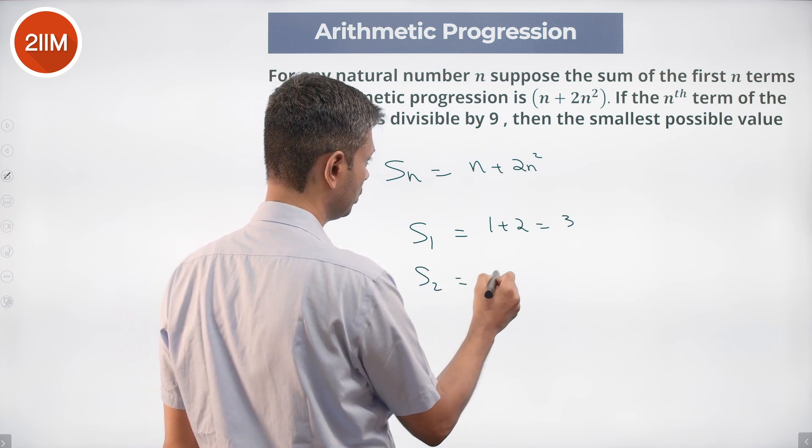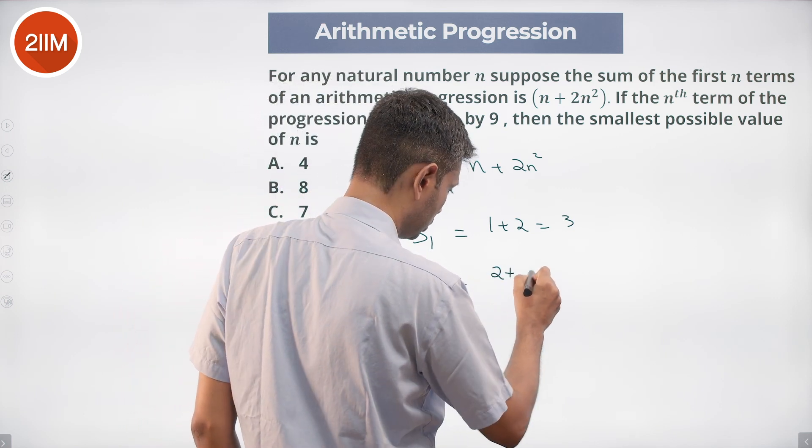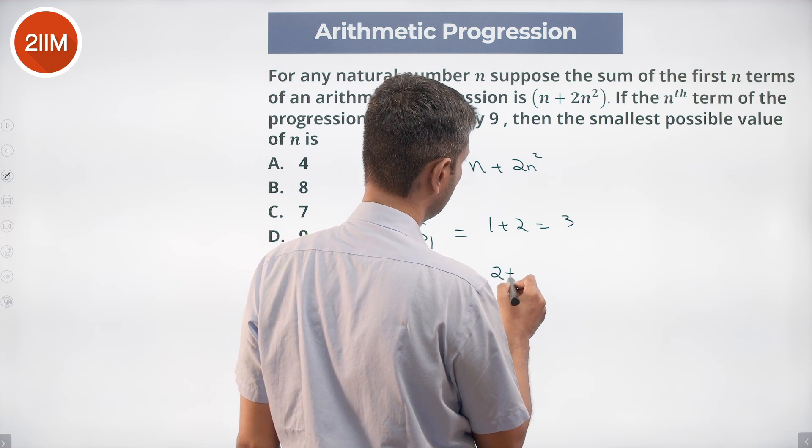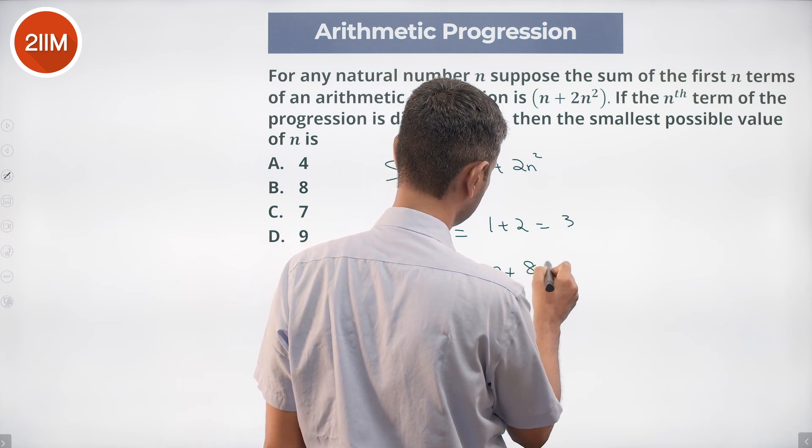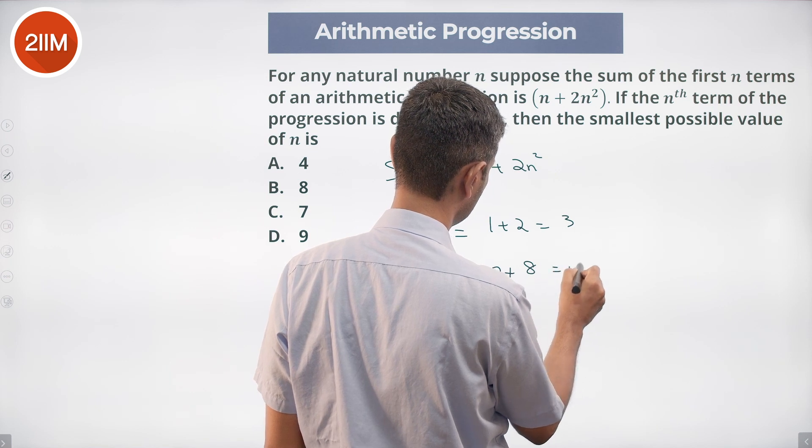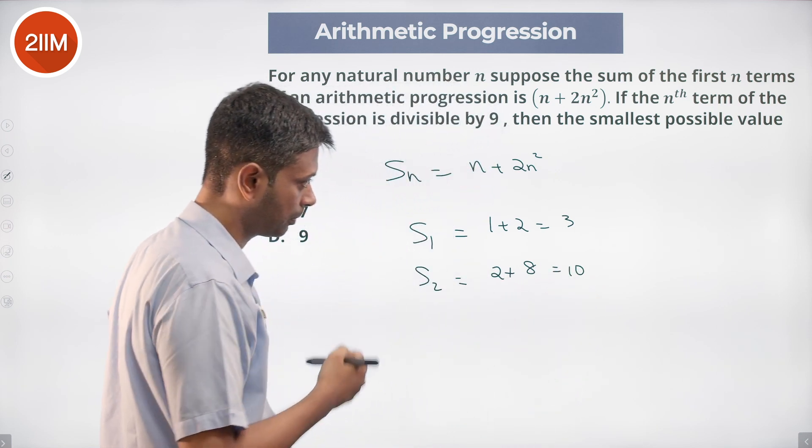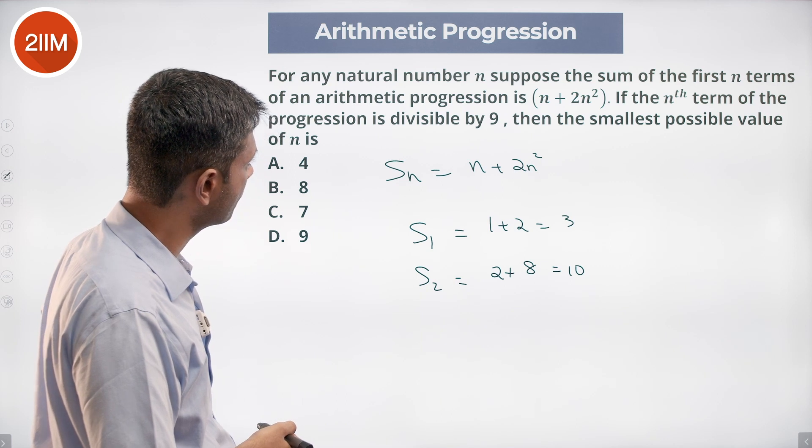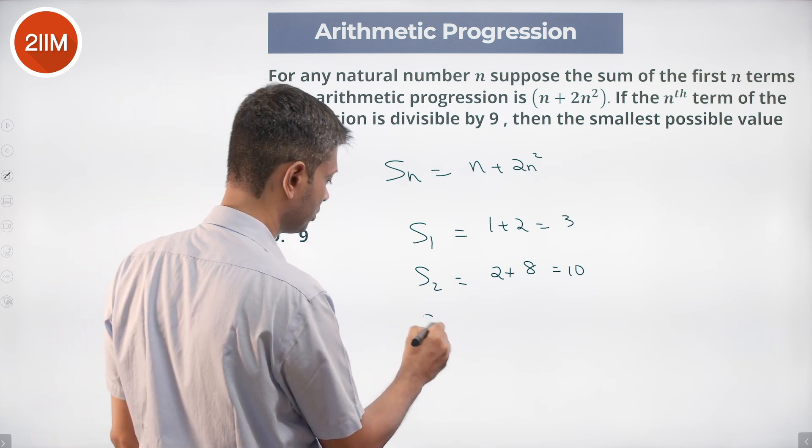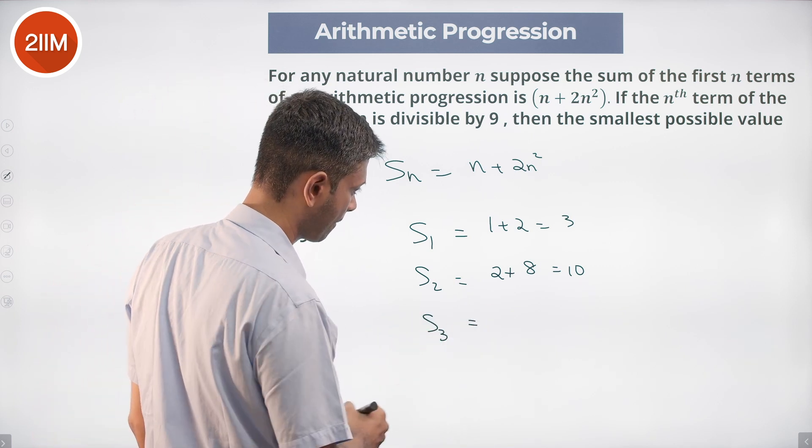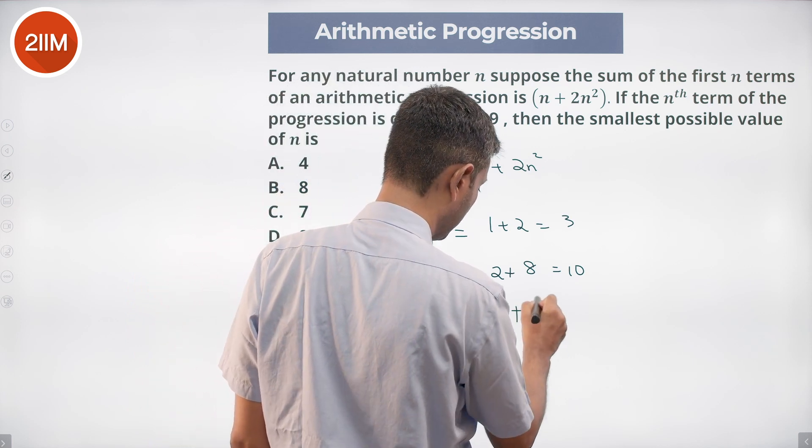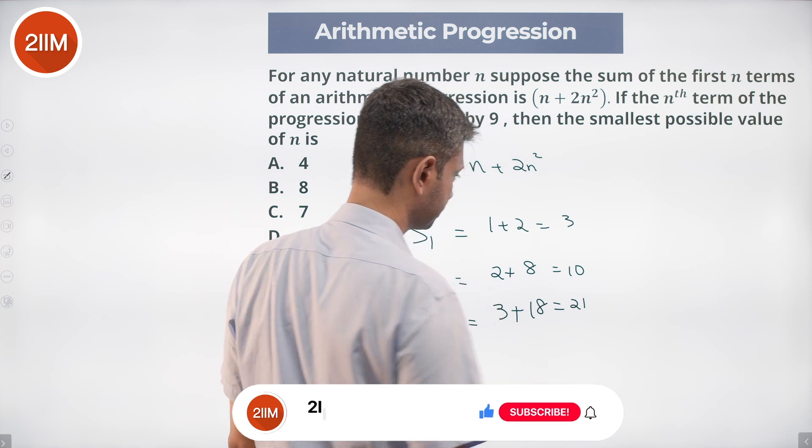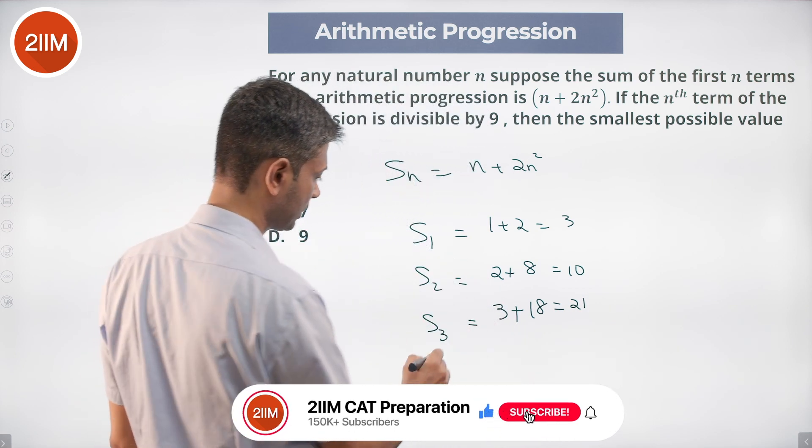Sum up to 2 terms: S_2 = 2 + 2(4) = 2 + 8 = 10. Sum up to 3 terms: S_3 = 3 + 2(9) = 3 + 18 = 21.